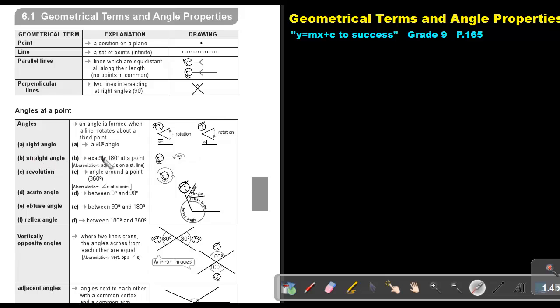A straight angle: exactly 180 degrees at a point. So exactly a straight line will be 180 degrees at that point. What is a revolution? A revolution is the distance around a point. So the angle around a point, that is a revolution.